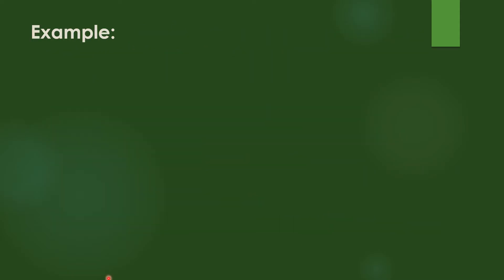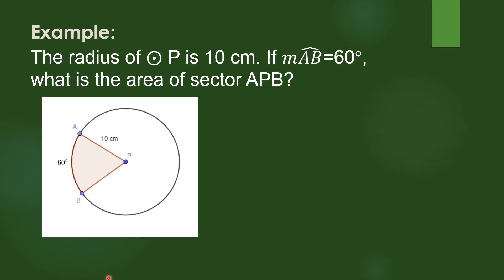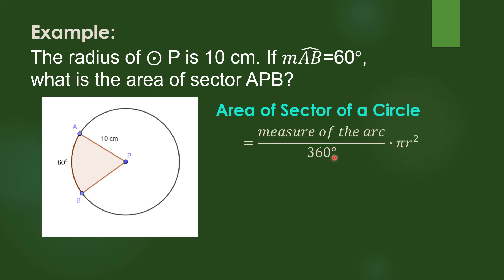Let's try to work on this example. The radius of circle P is 10 centimeters. If the measure of arc AB is 60 degrees, what is the area of sector APB? We will be using the formula: measure of the arc over 360 times pi r squared. We substitute the values: the measure of the arc is 60 degrees over 360, times pi, and the radius is 10 centimeters.